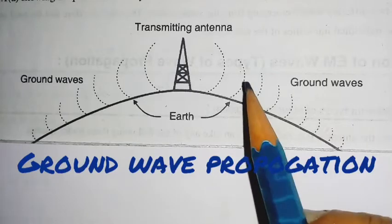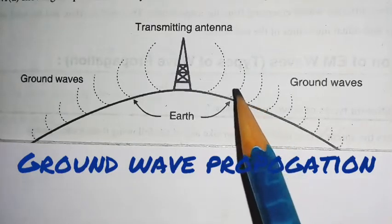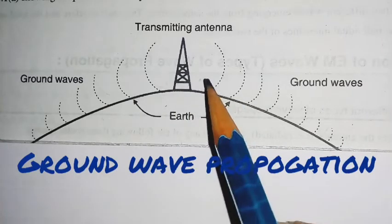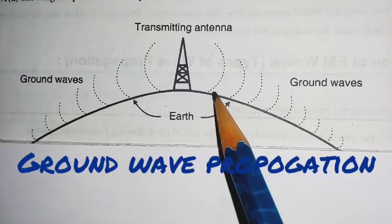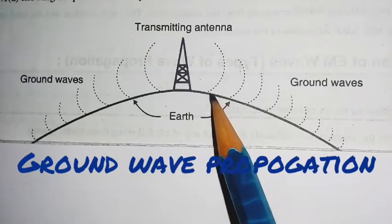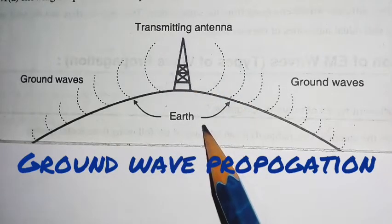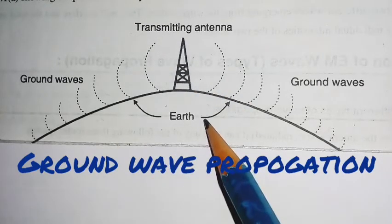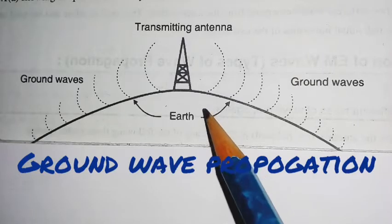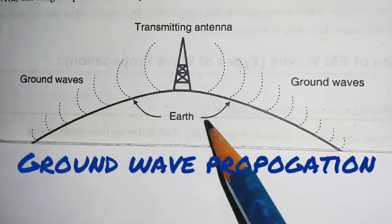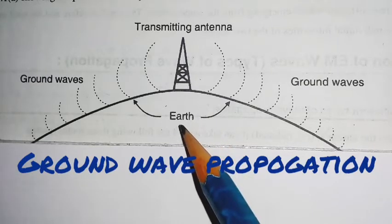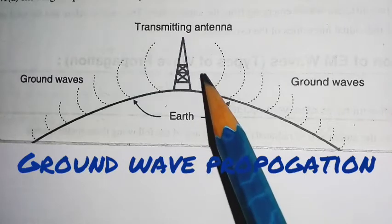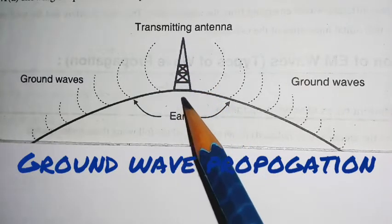In the detail description, the first point is the frequency range of ground wave propagation, which is from 30 kHz to 3 MHz. We can say that ground wave propagation has a frequency range from low to medium.